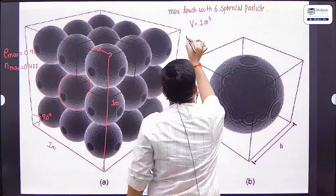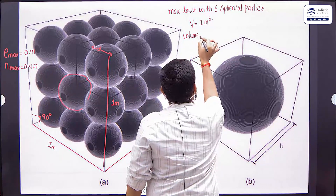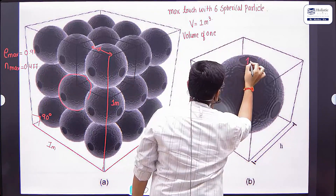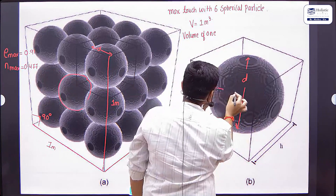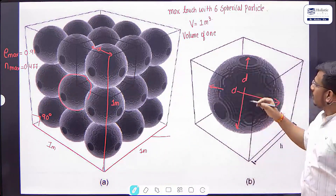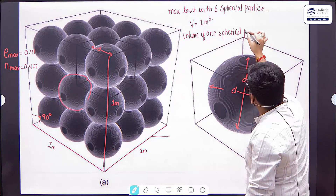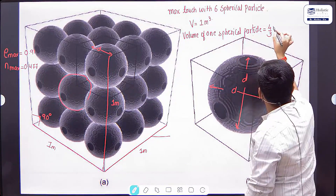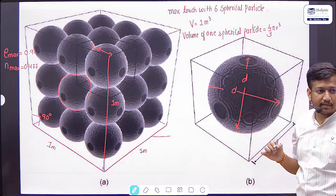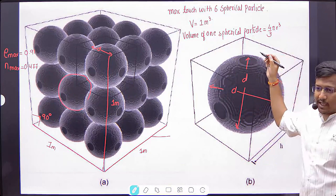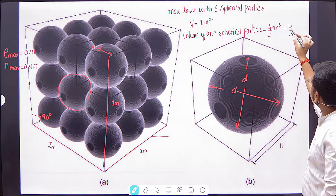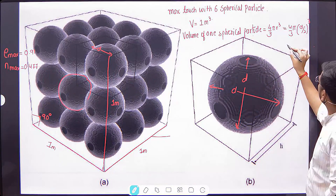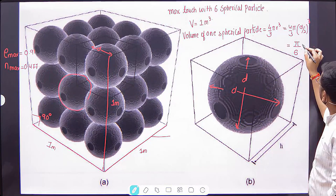What is the volume of one spherical particle? Volume of one spherical particle — suppose diameter is D — equals (4/3)πR³. Since R = D/2, substituting gives (4/3)π(D/2)³, which simplifies to (π/6)D³. So the volume of one sphere is (π/6)D³.